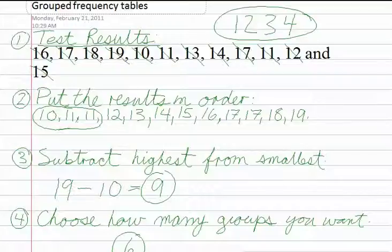In step two, I've taken those marks and I've put them in order from smallest to largest. For now, don't worry about why 10, 11, and 11 are circled. Just make sure that you understand that all of the marks have been written from smallest to largest. So the smallest mark is 10, the highest mark is 19.